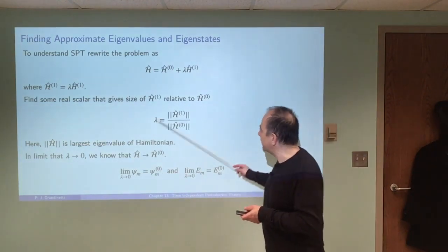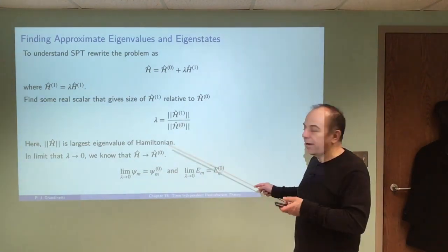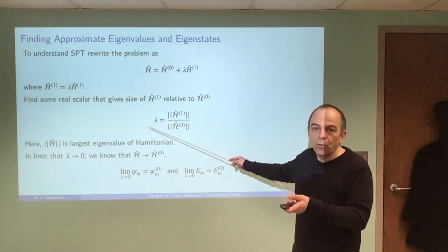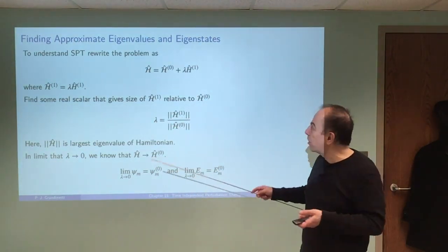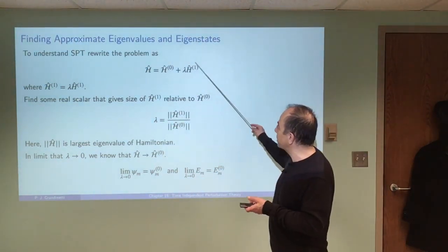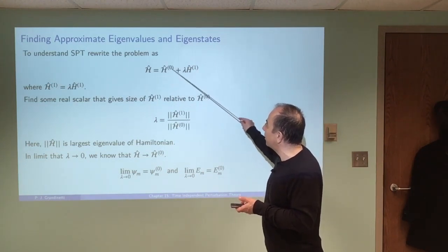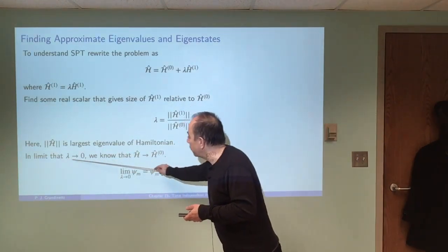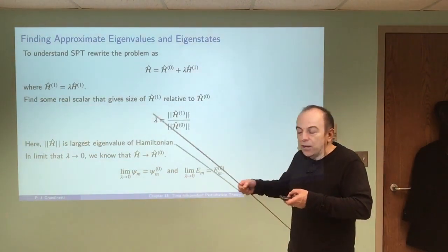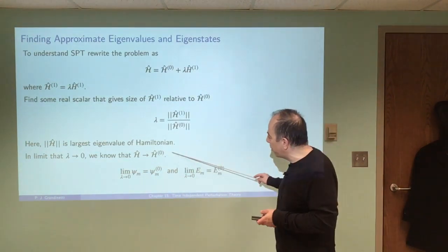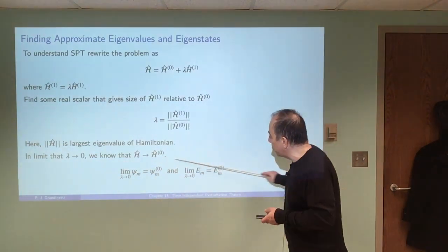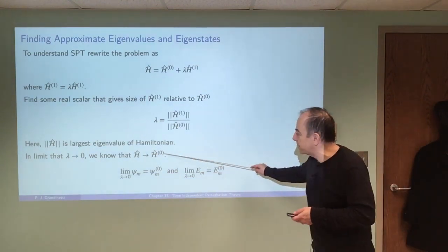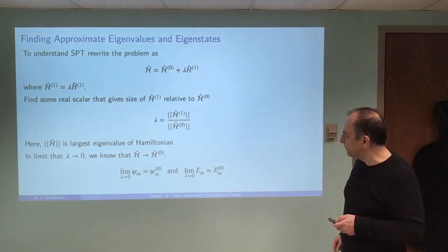For this to work, we need lambda to be small. If lambda is close to one or greater, then we're no longer looking at a situation where H1 is a small perturbation on H-naught. What we want is a solution where lambda deviates away from zero — when lambda goes to zero, our solution should reduce to the eigenvalues and eigenstates of H0.